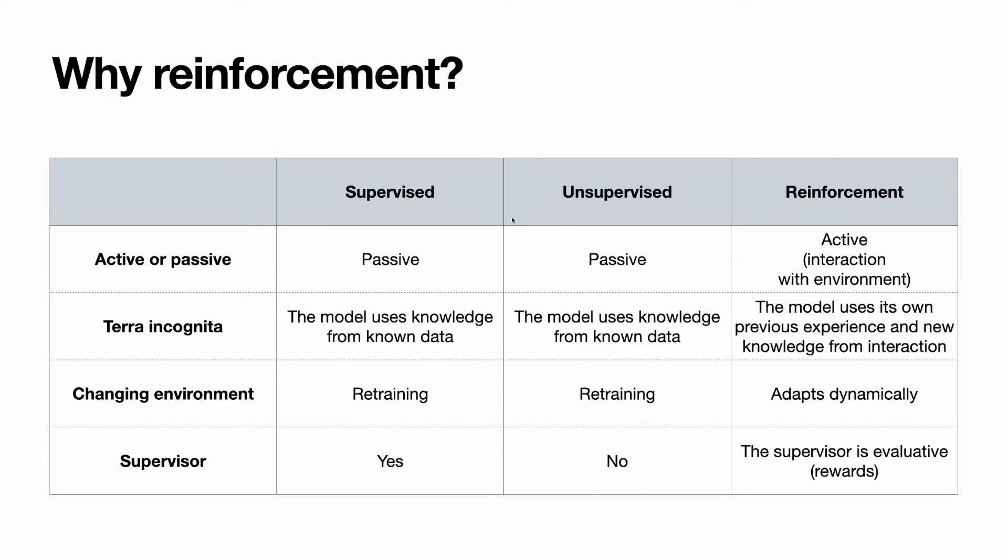It is different from supervised and unsupervised in terms that the learning of supervised and unsupervised models is passive. Once you train them, they no longer progress, while RL interacts with environment and is capable of dynamic adaptation. The only options for supervised and unsupervised methods with changing environment are consistent retraining of the models, while RL can adapt dynamically with the same model feature set.